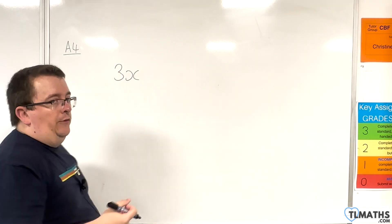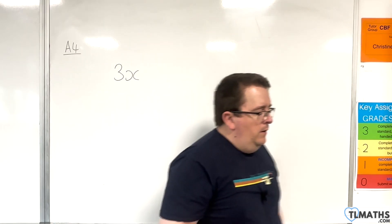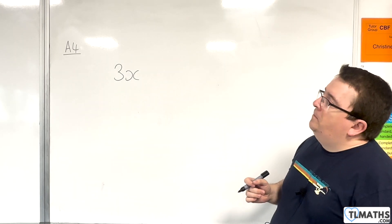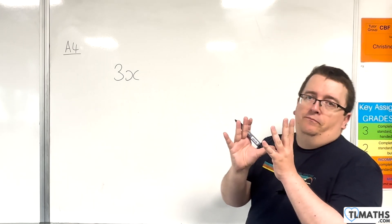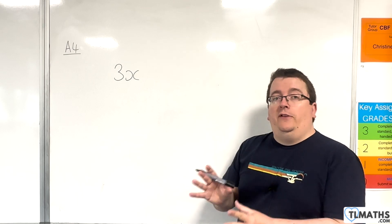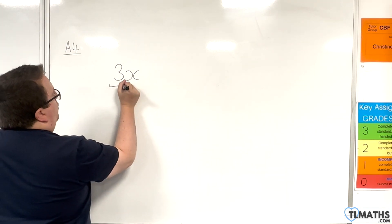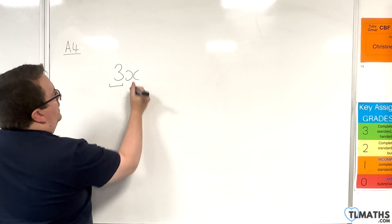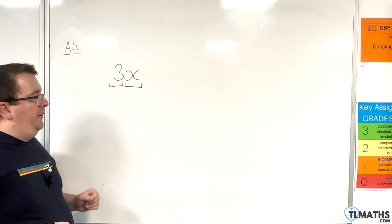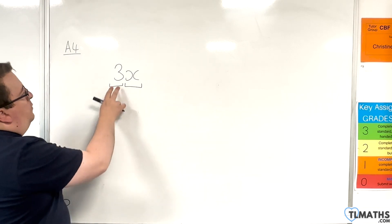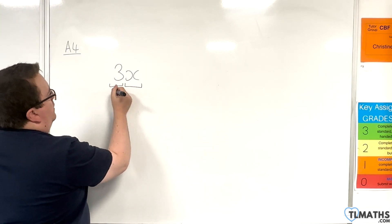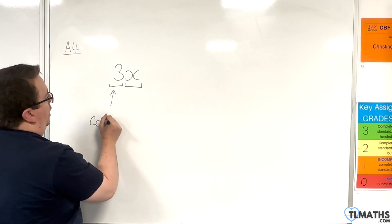So let's look at 3x, for example. What you need to be able to do is look at that term and break it up into two pieces. The two pieces are where the number is and where the letters are, essentially. So the number at the front, this is referred to as the coefficient.